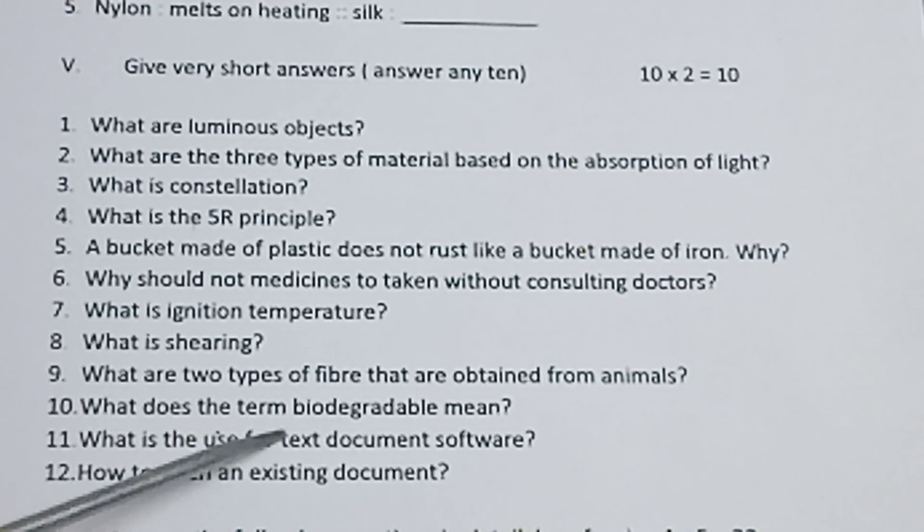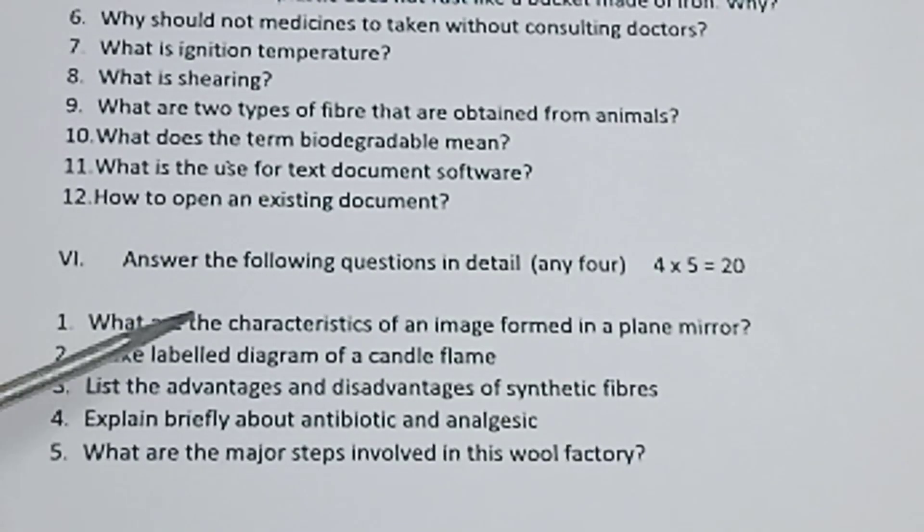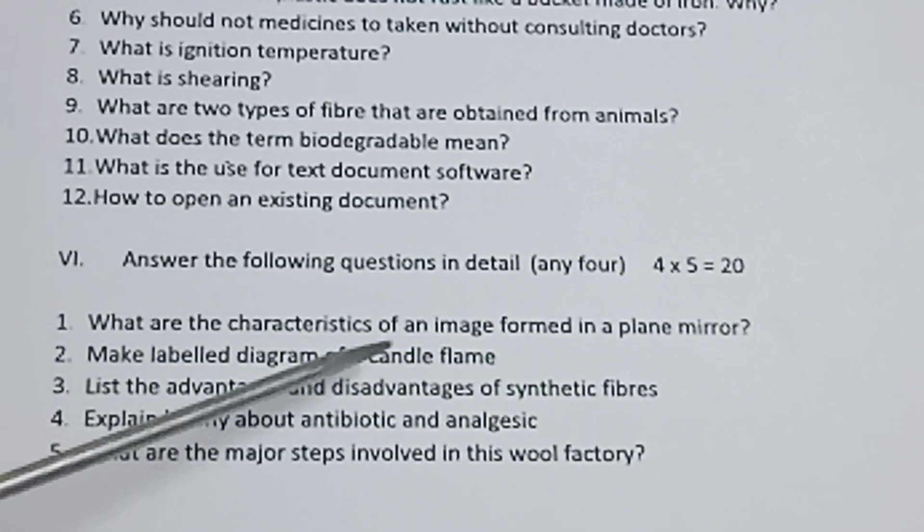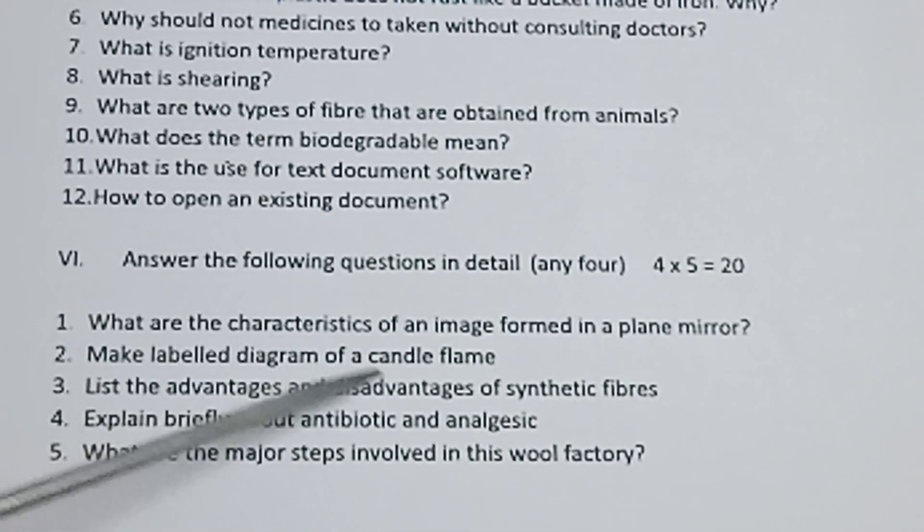Tenth one, what does the term biodegradable mean? Eleventh one, what is the use for text document software? Twelfth one, how to open an existing document? Roman numeral 6, answer the following questions in detail. Any 4, 4 into 5 is equal to 20. What are the characteristics of an image formed in a plane mirror? Make a labeled diagram of a candle flame. Third one, list the advantages and disadvantages of synthetic fiber. Fourth one, explain briefly about microbes. Fifth one, what are the major steps involved in silk factory? Five questions, should answer any four.